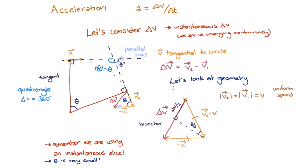So, if we consider our diagram, v is the hypotenuse, half of delta v is the opposite side, and the angle is half of theta. So we can write, sin of theta on 2 is equal to delta v on 2 divided by v.